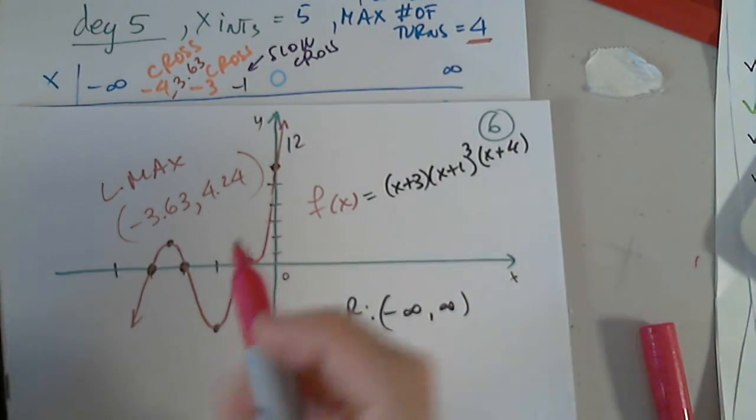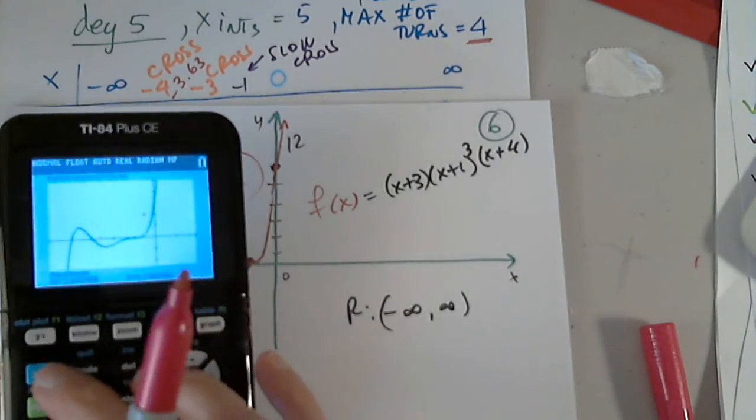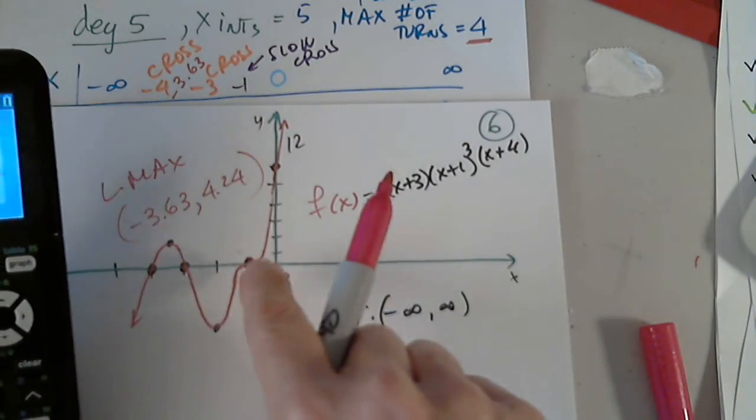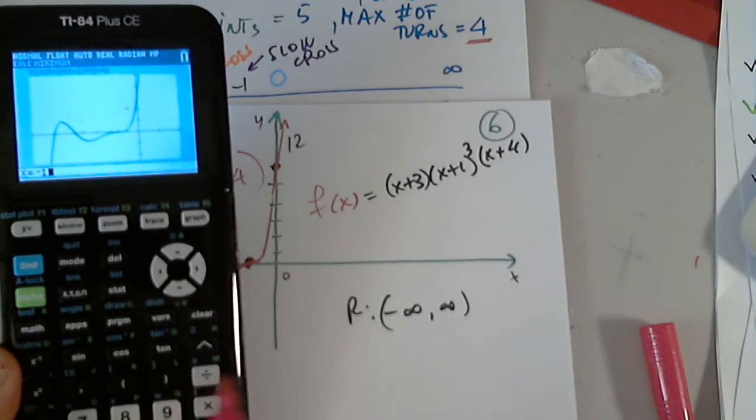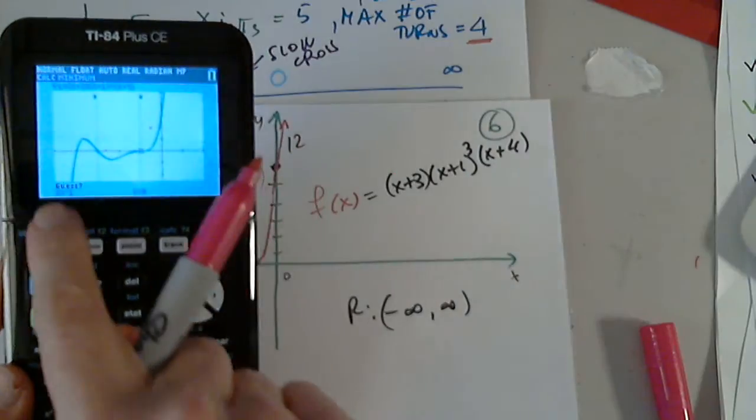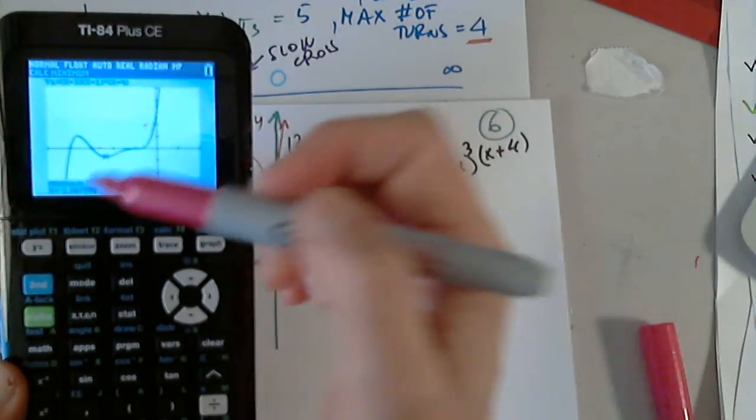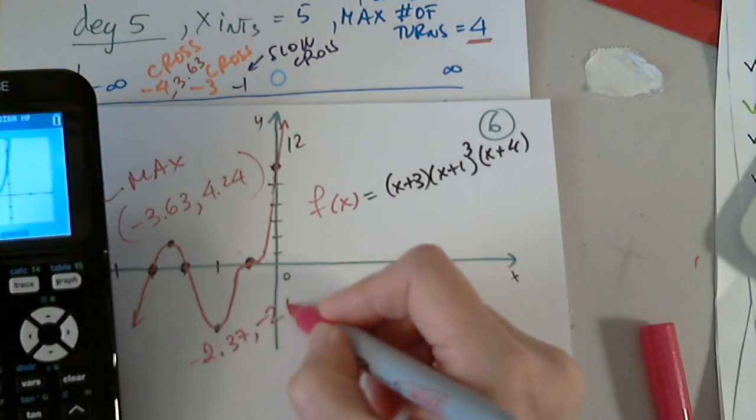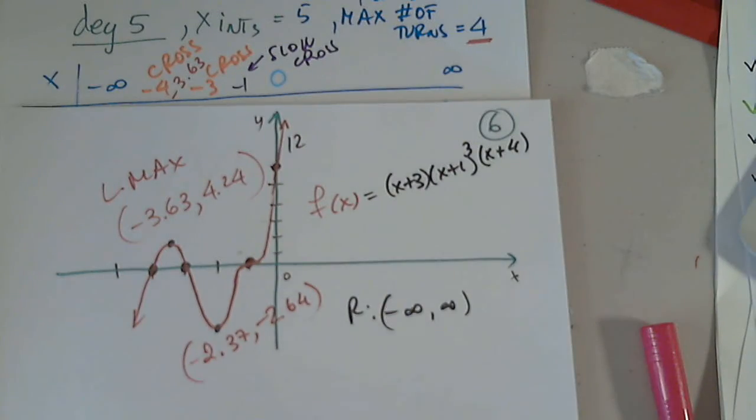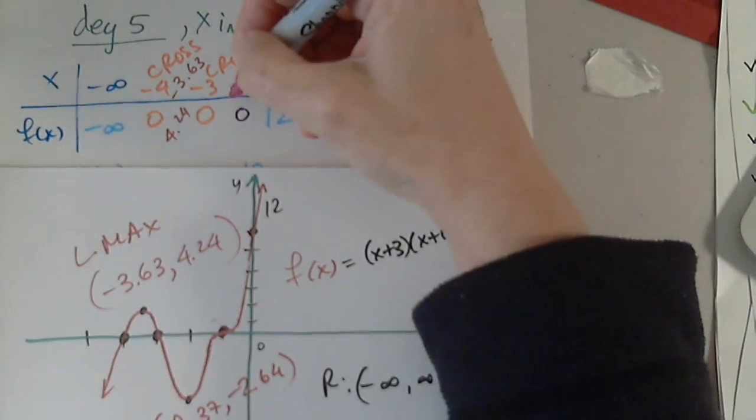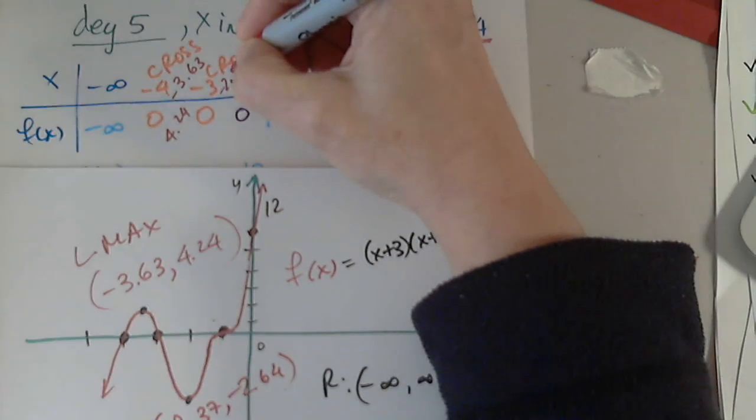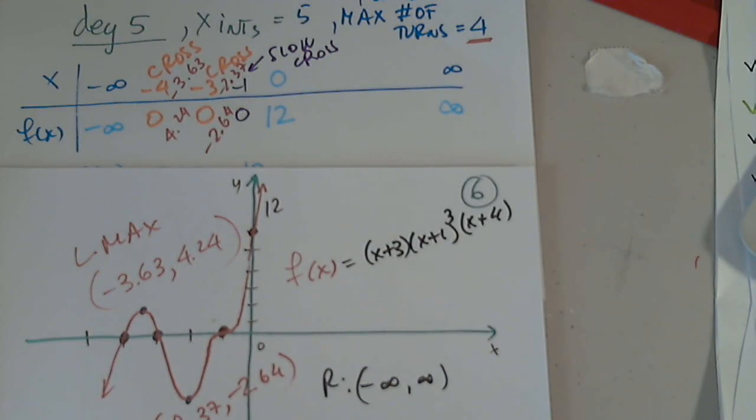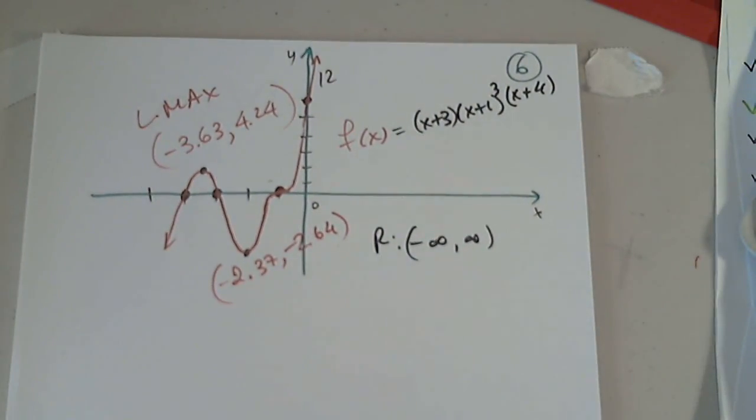Now I have to find a local min. And I know it's between negative 3 and negative 1. Second and calc. This time I want the minimum, which is a 3. And I want between negative 3 and negative 1. Negative 3, enter. Negative 1, enter. Yes, it's exactly where I wanted it. I don't want to guess. Enter. Give me the minimum. It's at negative 2.37, comma, negative 2.64. Again, I didn't plan ahead properly. So this is at negative 2.37, comma, negative 2.64. And this is it. We do not need anything else.